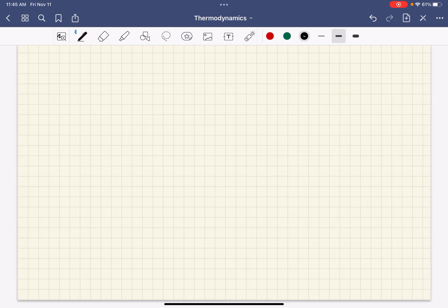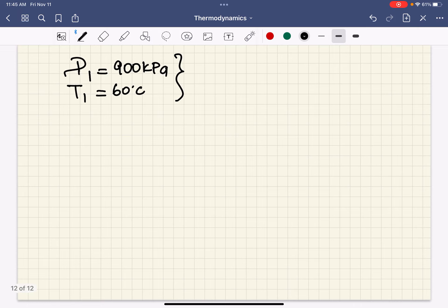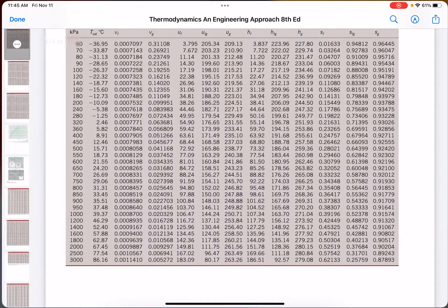So for the inlet state, or the first state, we can say the pressure is given to be 900, and the temperature is given to be 60 degrees Celsius. First of all, we need to look at the saturated refrigerant tables, which will guide us to look at the correct tables to read the properties of that refrigerant.